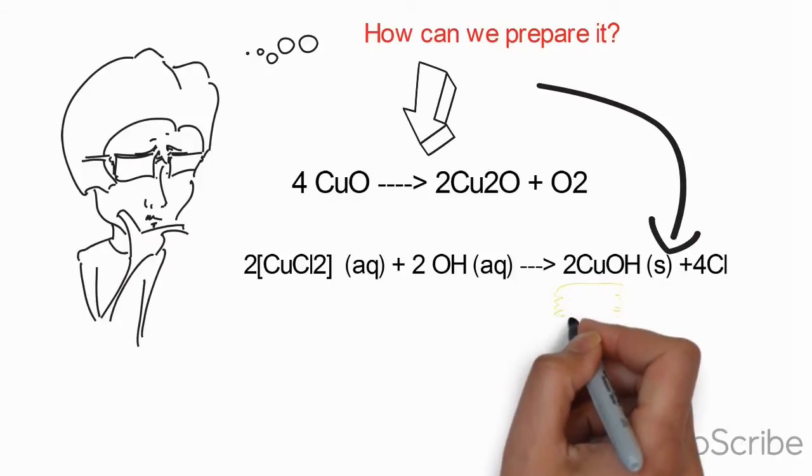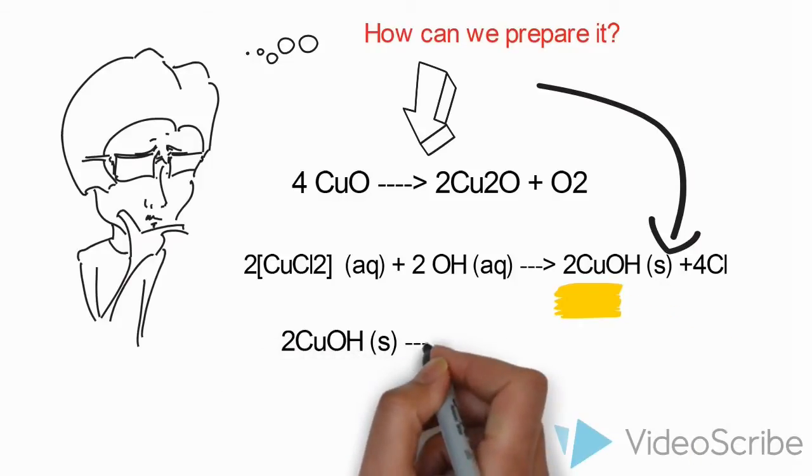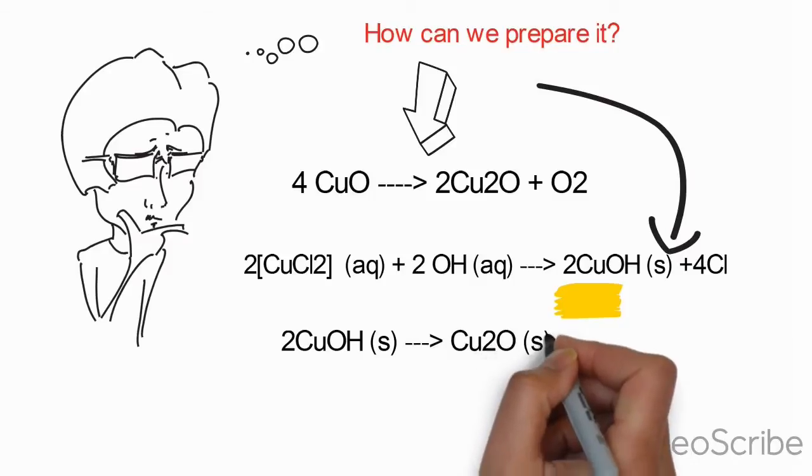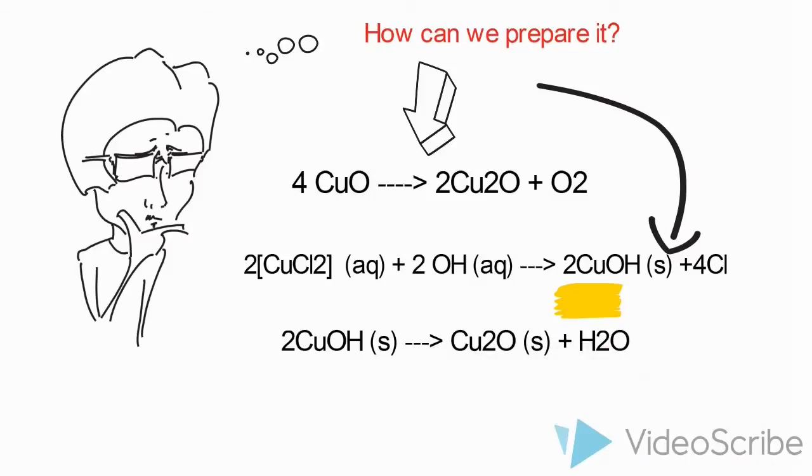It's presumed that primarily the yellow precipitate of copper 1 hydroxide is formed. There is little evidence that it really happens because copper 1 hydroxide undergoes rapid change to red copper 1 oxide caused by continued heating.